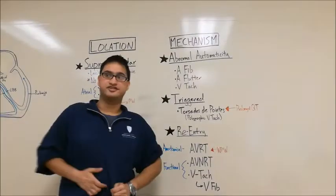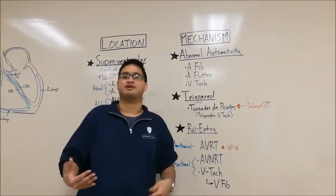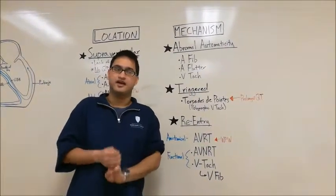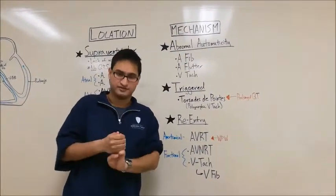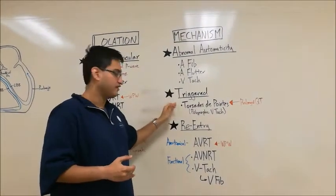So now that we discussed classifying arrhythmias based on their location, let's now talk about classifying arrhythmias based on their mechanism of generation. There are three major mechanisms by which arrhythmias generate. Abnormal automaticity, triggered activity, and re-entry.